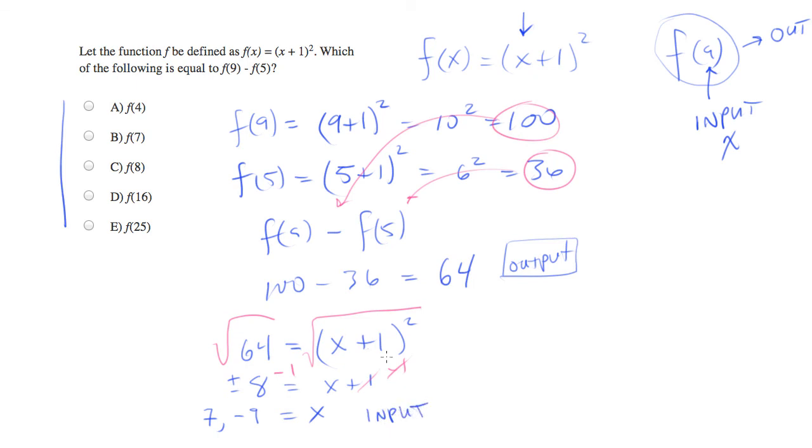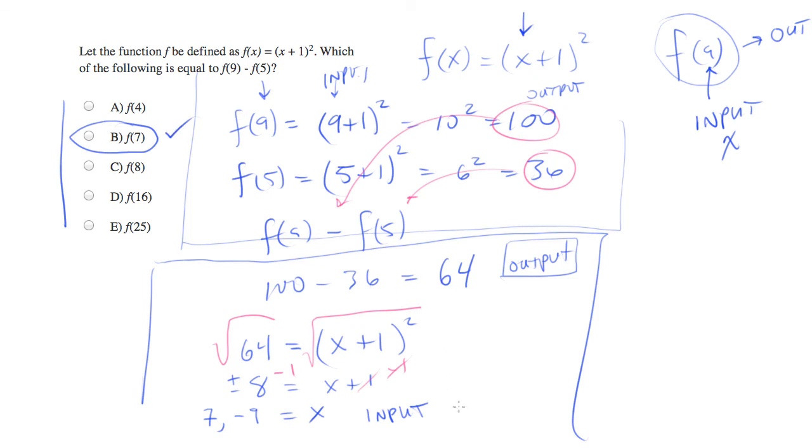Right? So in this case, from here down, we actually started with the output and backed out the input. When we were up above, we were using the input, 9, and figuring out the output. It turns out the input variable we want is either 7 or negative 9, and we have one of 7. So that's answer choice B.